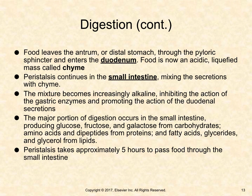The major portion of digestion occurs in the small intestine, producing glucose, fructose, and galactose from carbohydrates; amino acids and dipeptides from proteins; and fatty acids, glycerides, and glycerol from lipids. Peristalsis takes approximately 5 hours to pass food through the small intestine.